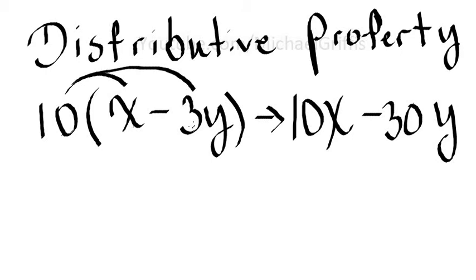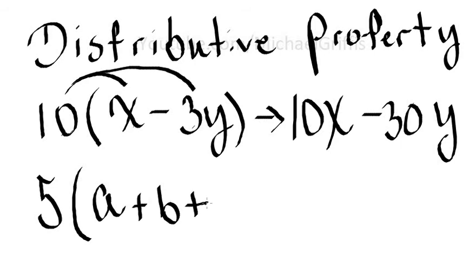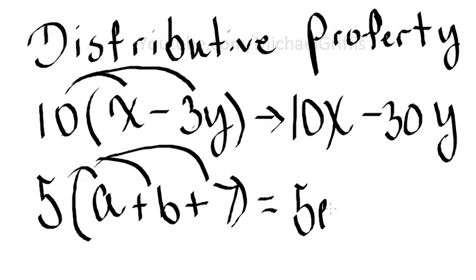Let's take a look at another polynomial. I should say equals on there because these are equal. So distributing the 5 across to each term inside, we have 5a plus 5b plus 35.